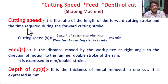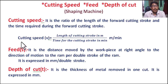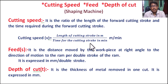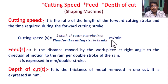Cutting speed V equals the length of the cutting stroke in meters divided by the time for the cutting stroke in minutes. So cutting speed unit is meters per minute.